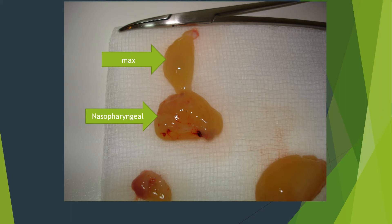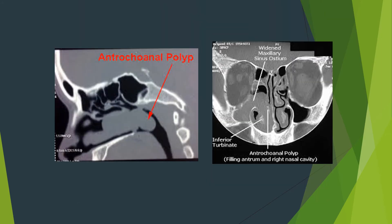On CT scan showing the antrochoanal polyp, you can see the polyp coming from the nasal cavity and passing backwards to the nasopharynx. On the coronal CT scan, you can see the maxillary sinus polyp going out through its ostium to the nasal cavity.